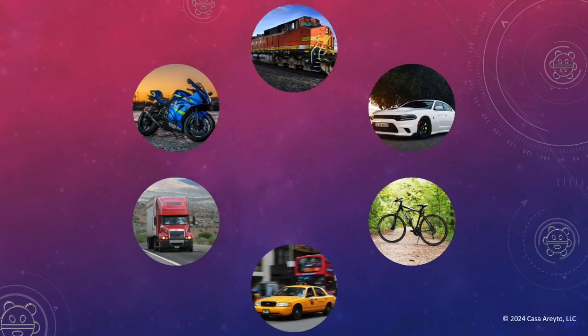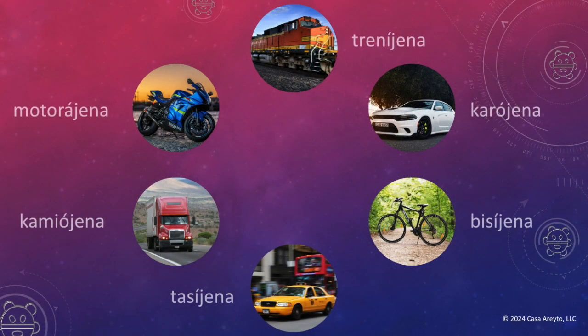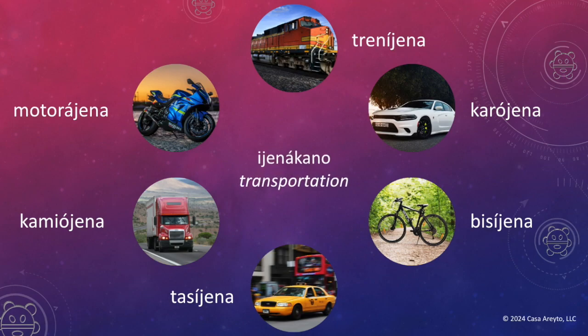Now let's take a look at our next series of objects. How are these things connected? Trenigena, Karohena, Visigena, Tasigena, Kamiohena, Motorahena. How are they connected? They are all ihenakkano — transportation.